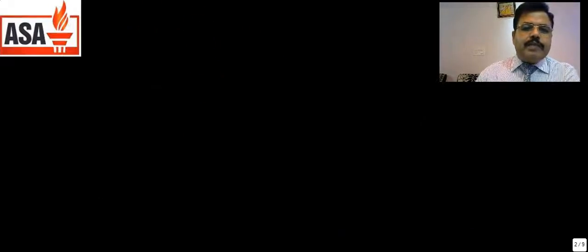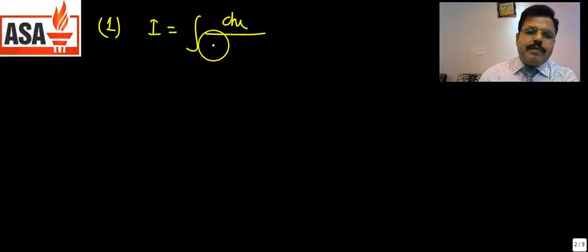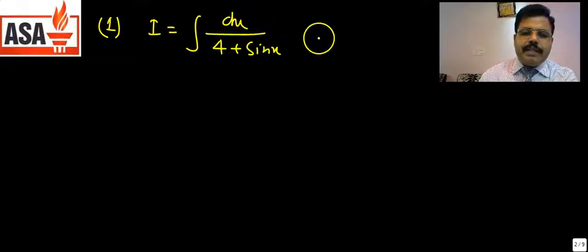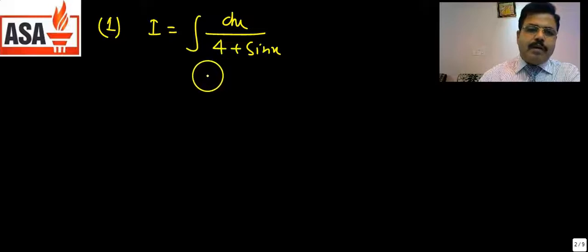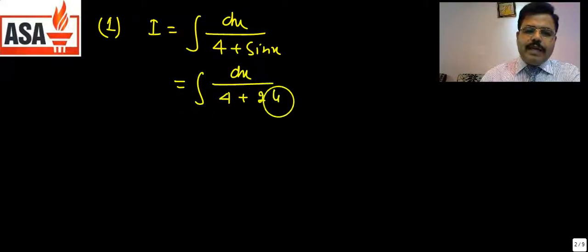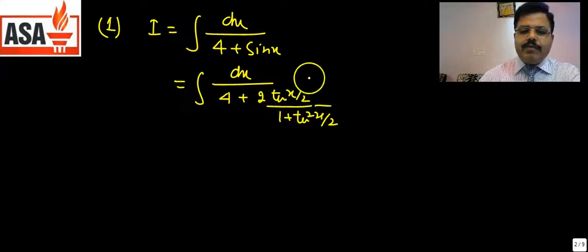Let us now see some applications of this. The first question is: I = ∫ dx/(4 + sinx). To solve this, we put sin x = 2tan(x/2)/(1 + tan²(x/2)), so it becomes ∫ dx / (4 + 2tan(x/2)/(1 + tan²(x/2))). Now multiplying through by (1 + tan²(x/2)).